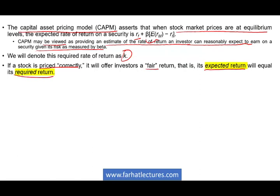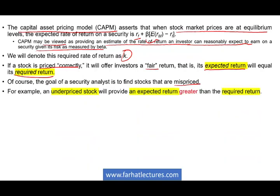When we do financial stock analysis, we want to find mispriced stocks to be better off. The goal of a security analyst is to find stocks that are mispriced. If they are undervalued, we buy them. If they're overvalued, we short them. An underpriced stock will provide an expected return greater than the required rate of return — we can measure this through CAPM. If the expected return is greater, we should buy the stock because it's on a discount, on a sale.